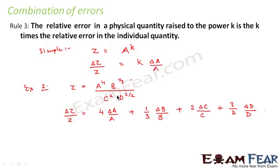Whether it is multiplication or division, the relative errors of each quantity add up, and the power gets multiplied — that is the simple principle. We studied three rules in combination of errors: Rule 1 — when quantities add or subtract, absolute errors add up. Rule 2 — when quantities multiply or divide, relative errors add up. Rule 3 — when a quantity is raised to the power k, the relative error in the final quantity equals k times the relative error in the original quantity.